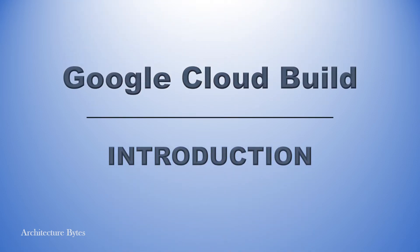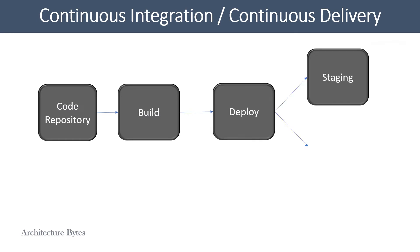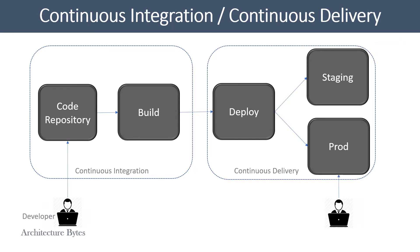Introduction to Google Cloud Build. What is CI/CD? It is the automation of building, testing, and deployment of your applications — in other words, automating your release process. As you can see in the diagram, the primary components of such a process are a code repository, building, deploying, and your deployment targets. This process may be kicked off based on events.